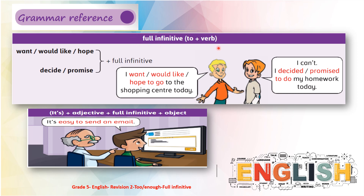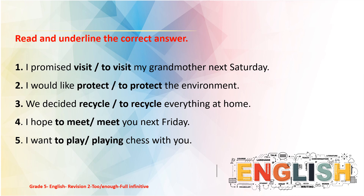We have another structure in module nine: the full infinitive — 'to' plus verb. We use want, would like, hope, decide, and promise plus the full infinitive. For example: 'I want / I would like / I hope to go to the shopping center today.' Also: 'I decided / I promised to do my homework today.' We also use 'it's' plus adjective plus full infinitive — for example: 'It's easy to send an email.'